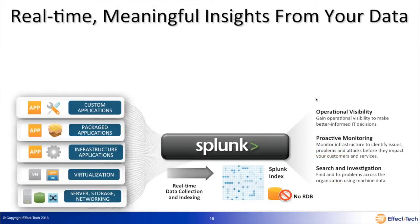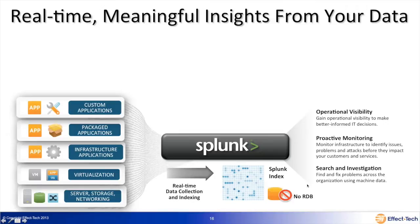Drilling into more details: you collect data using a Splunk forwarder — a simple collector, no connectors, no parsers, no special programming required. Simply tell it where the data is — on these applications, the database, the different tiers, different data centers — and send it to Splunk. It collects in real time, knows the source, the host, and the timestamp. It tails log files and data sources and writes to the Splunk index. The Splunk index is not a database — that's what makes it very fast to search. There is no schema, meaning you define what you want to search on at the time of the search — schema on the fly.